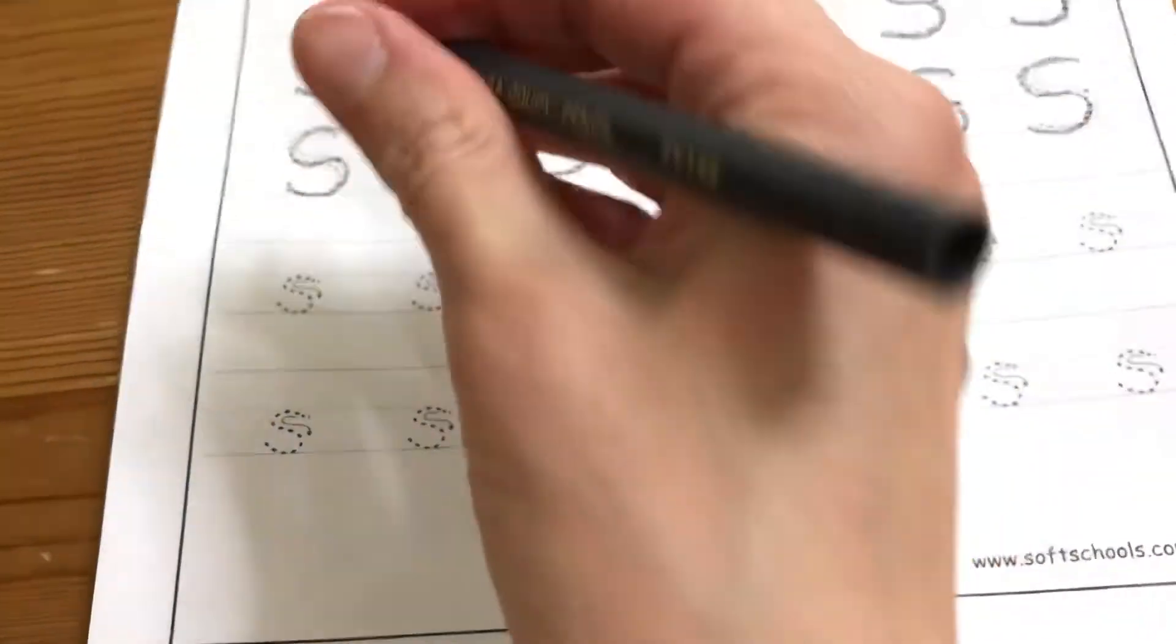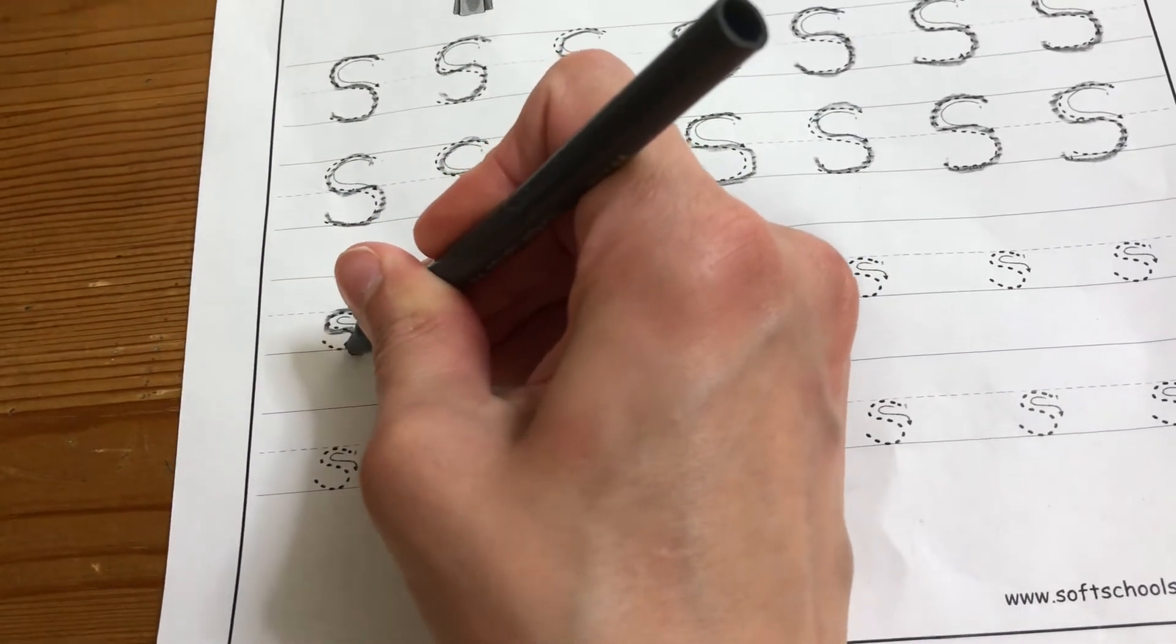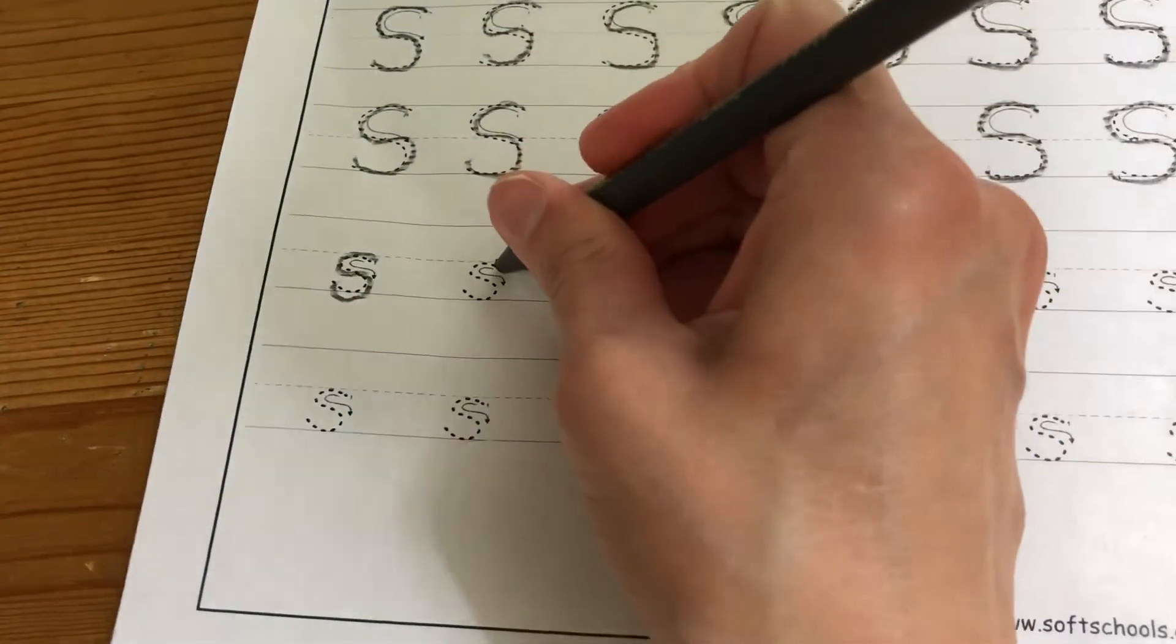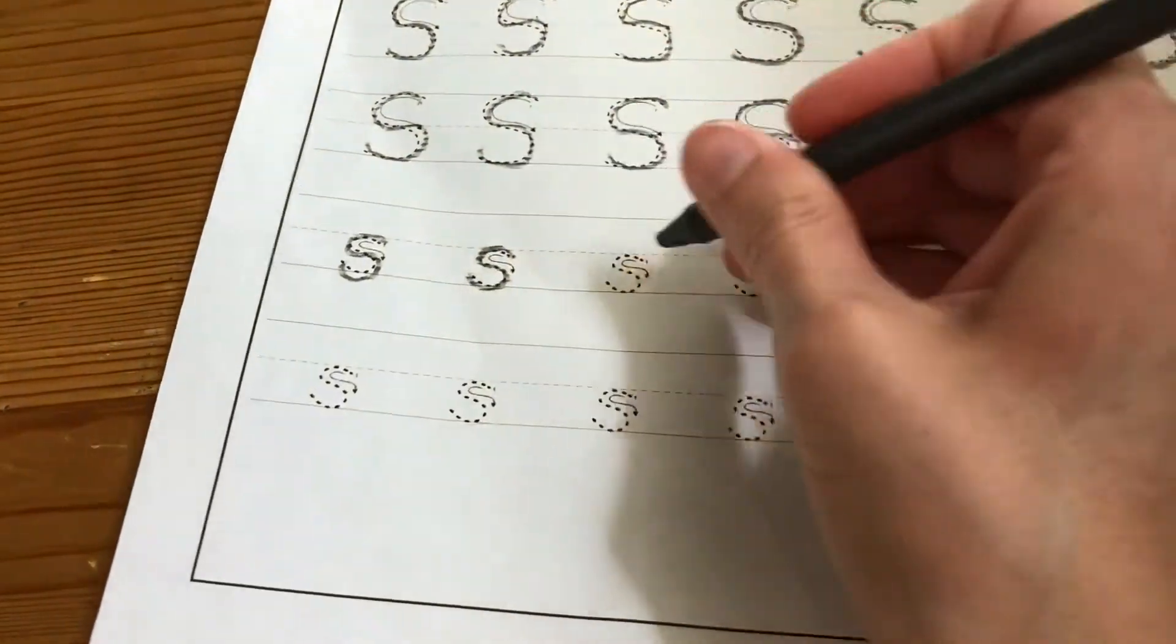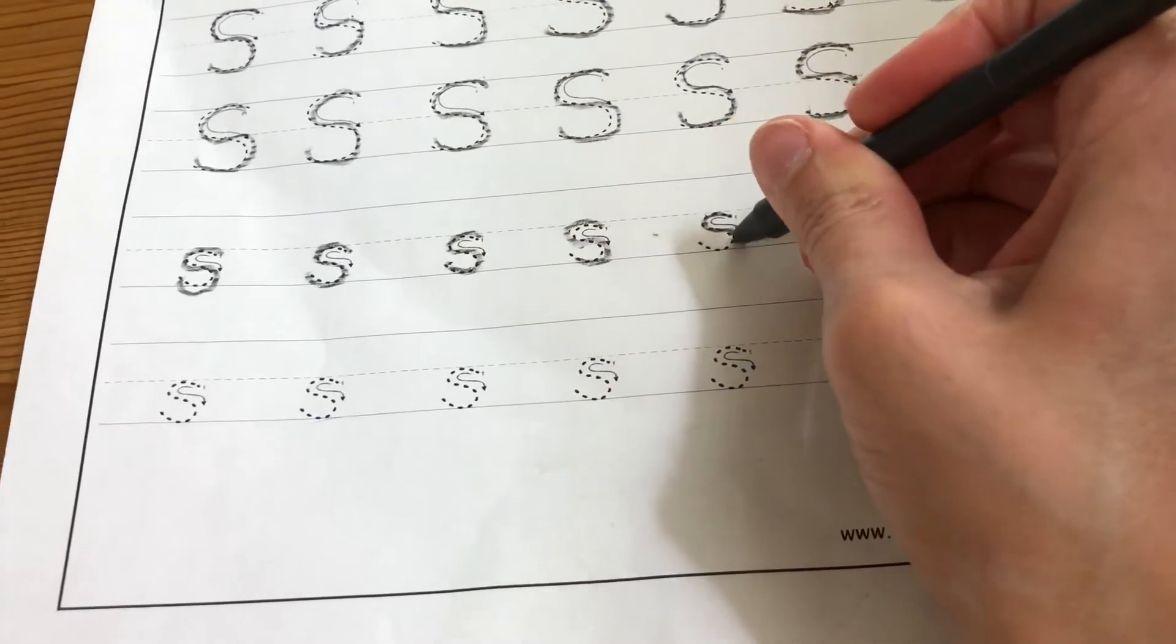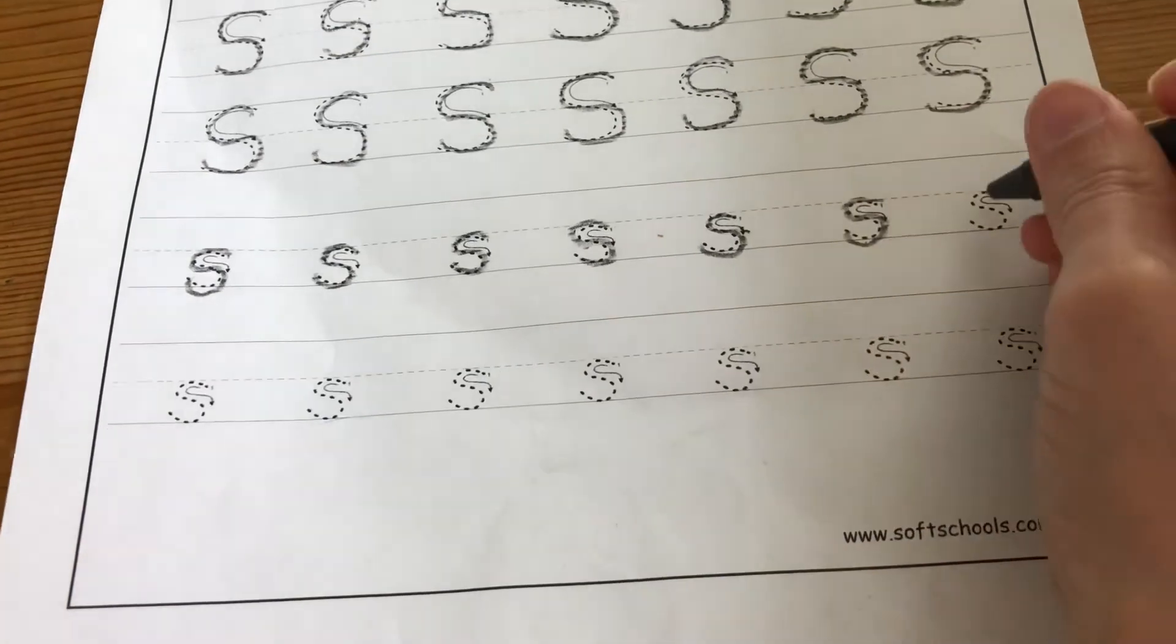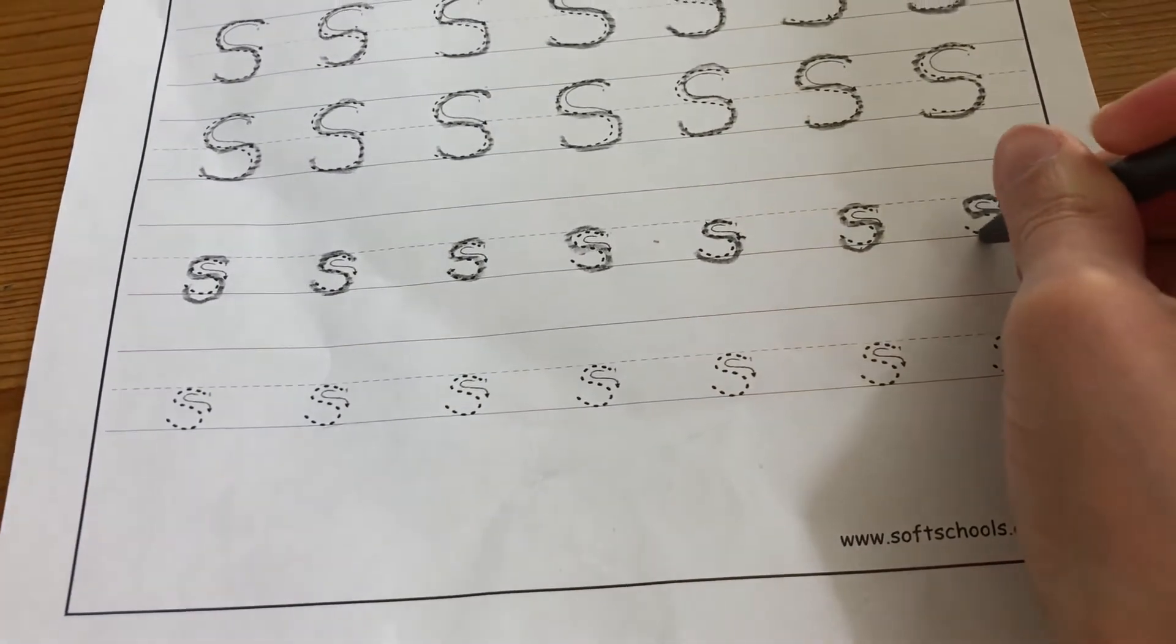So that leads us to little S. And like I said, little S is just the same as the big one, except it starts on the middle line. We just go around and around.